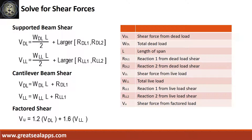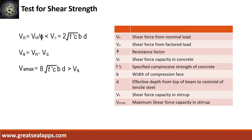Solve the maximum shear force from dead load shear force and live load shear force. Test for shear by getting the shear force from the nominal load and comparing it to the shear strength capacity of concrete Vc. If Vn is greater than Vc, additional shear force capacity in stirrups, Vs, is required and should be less than Vs max.